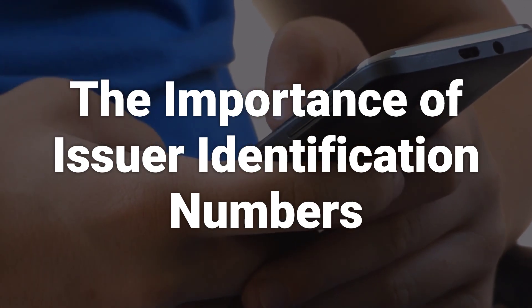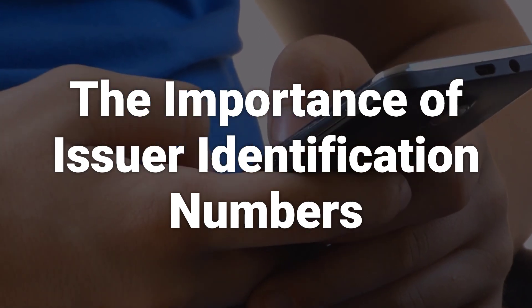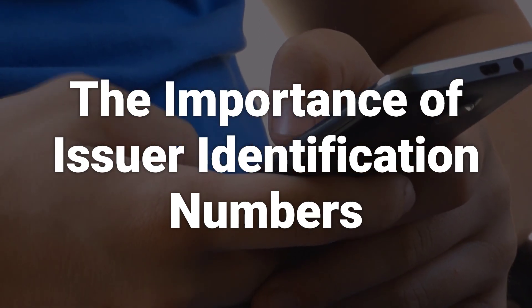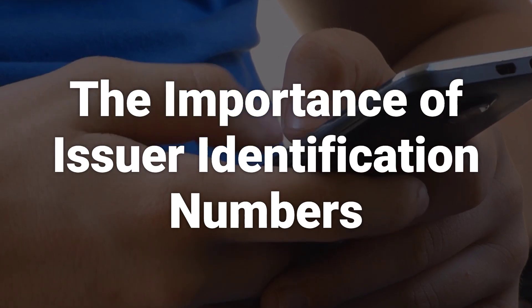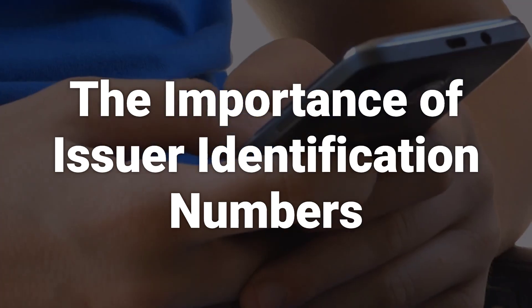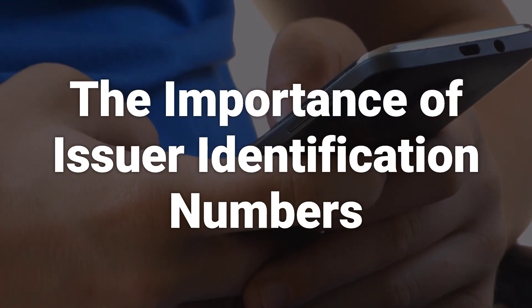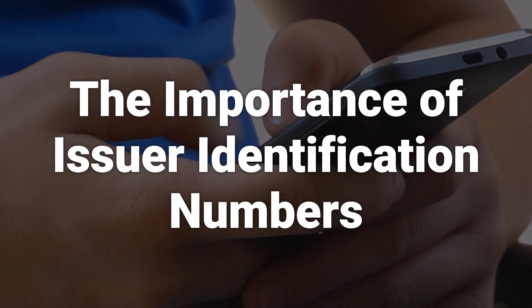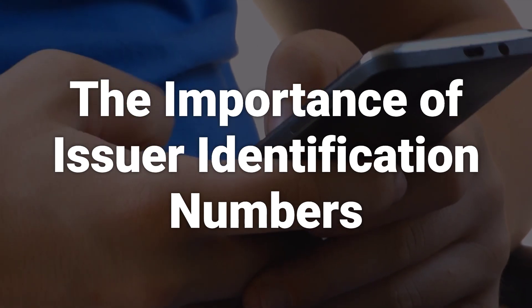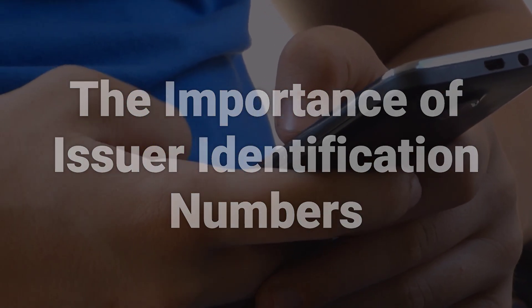Issuer identification numbers, and the individual account numbers that accompany them, allow merchants and others to verify that a card is valid and that the user's account has sufficient funds available to cover the transaction, and they make it happen almost instantaneously.